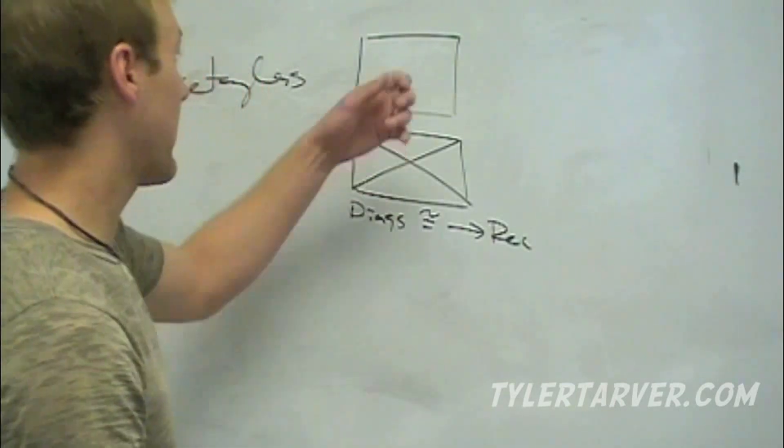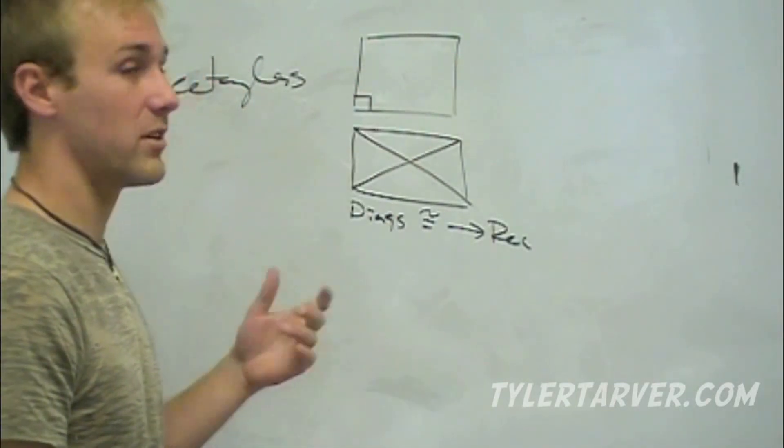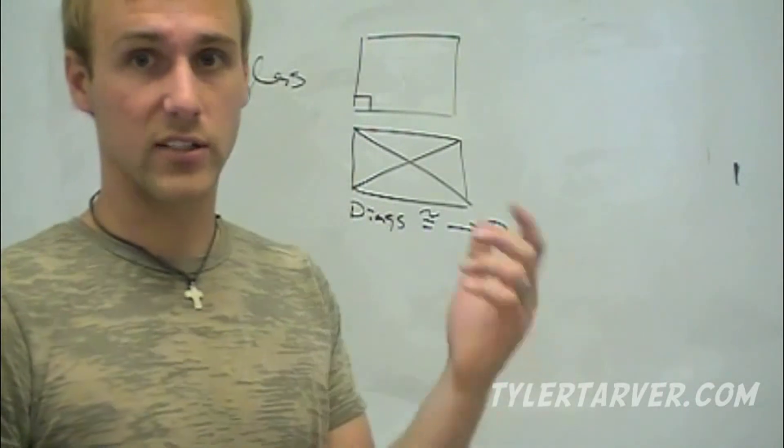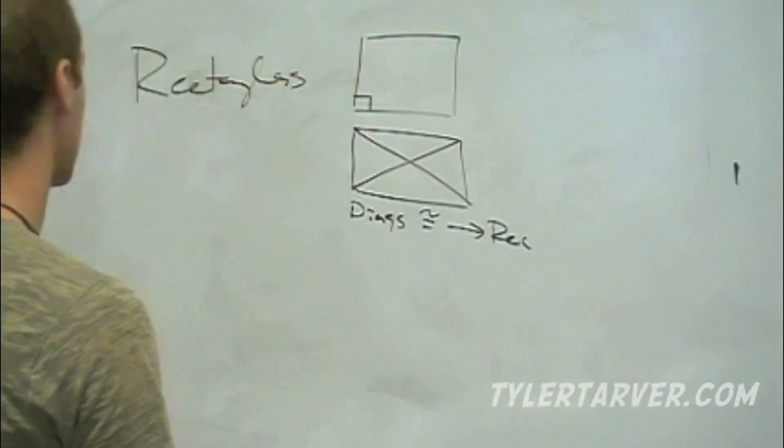And that's it for rectangles. If you've got a parallelogram and you know there's one right angle in it, it's a rectangle. Diagonals are congruent, it's a rectangle. Let's talk about the rhombus.